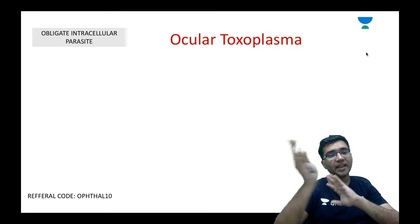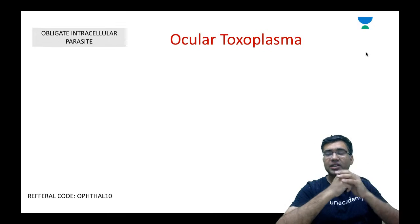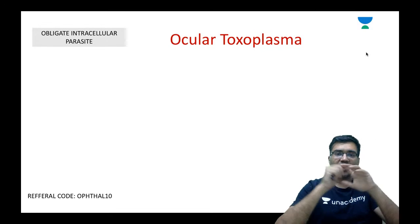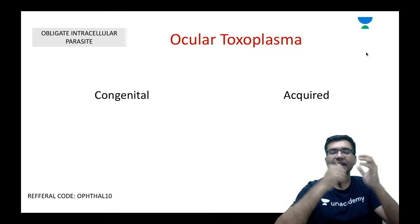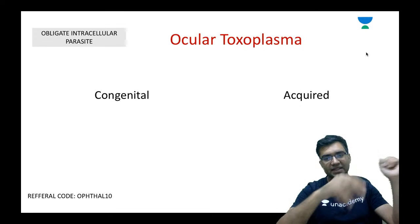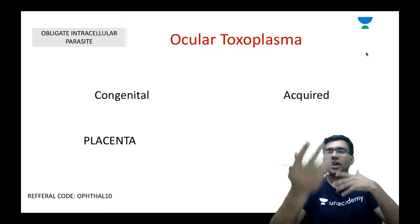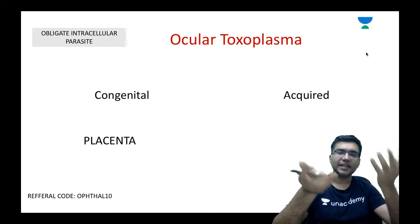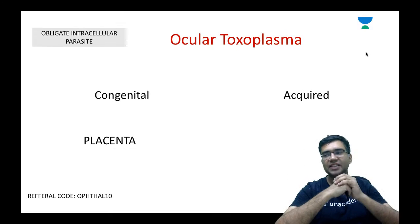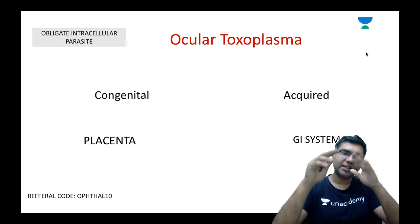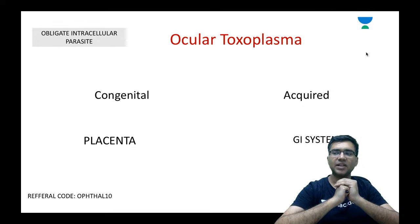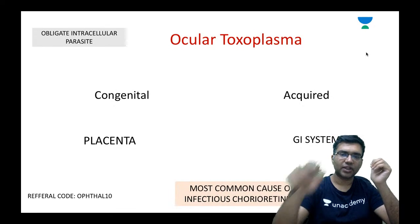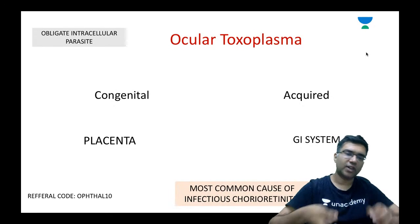Toxoplasma can be acquired or congenital. The congenital form occurs because of the child getting the infection from the bloodstream via the placenta. In the acquired form, it is acquired through the GI system. One very important point asked in the exam is that ocular toxoplasma is the most common cause of infectious chorioretinitis.